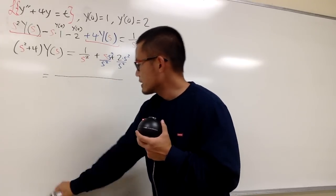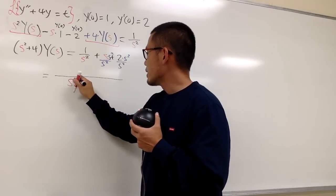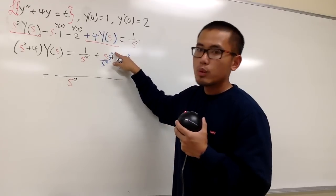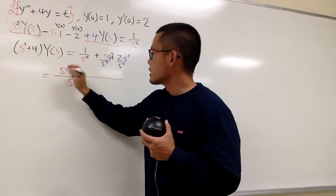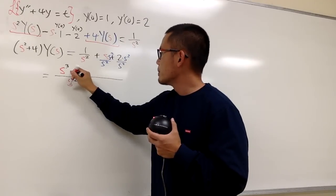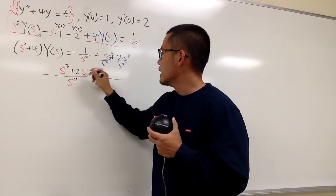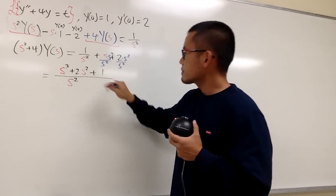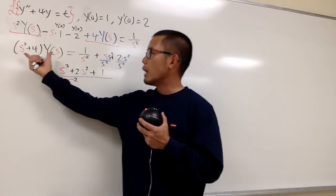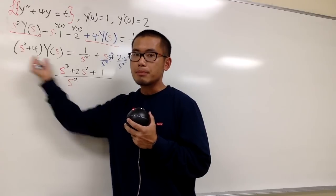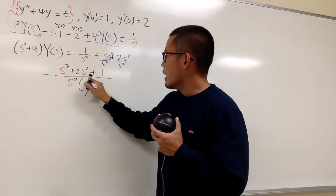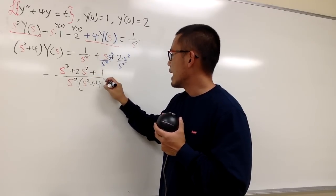Let me just work this out. The denominator is going to be s squared. On the top, we have s times s squared which is s to the third power, plus 2s squared, plus 1. This is the combined numerator result. Now I want to isolate Y(s), so I will divide both sides by s squared plus 4, giving us Y(s) on the left-hand side by itself.